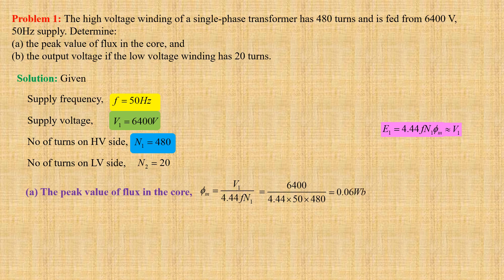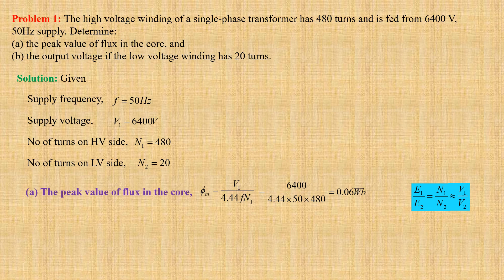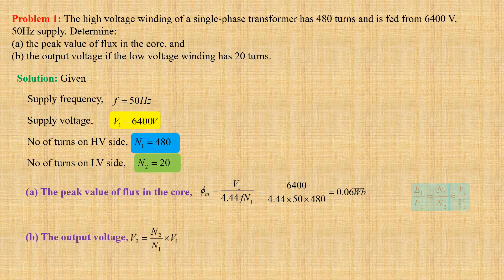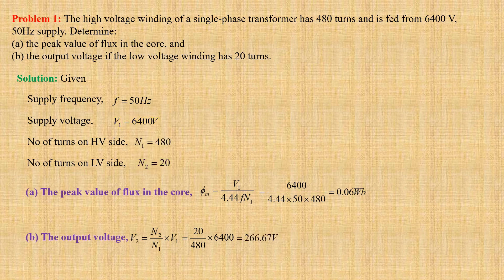For a single phase transformer, E1/E2 equals N1/N2, which is approximately equal to V1/V2. The output voltage V2 equals N2/N1 × V1. Using values we get 20 divided by 480 × 6400, that gives us 266.67 volts.